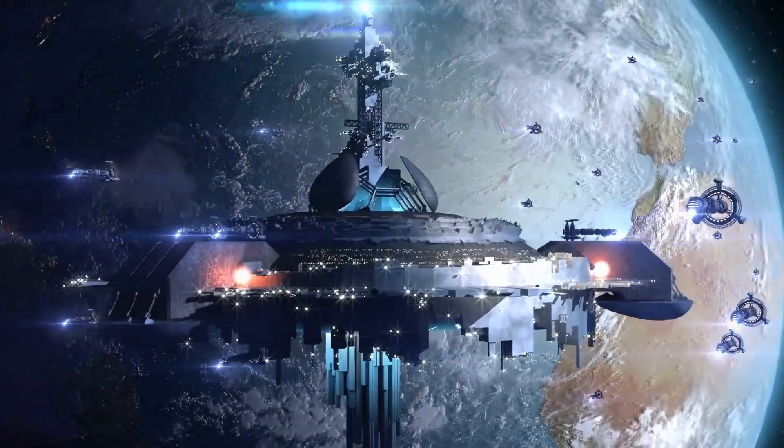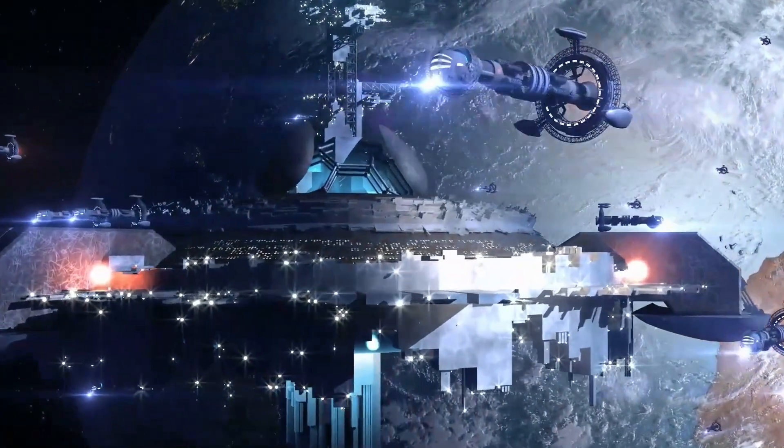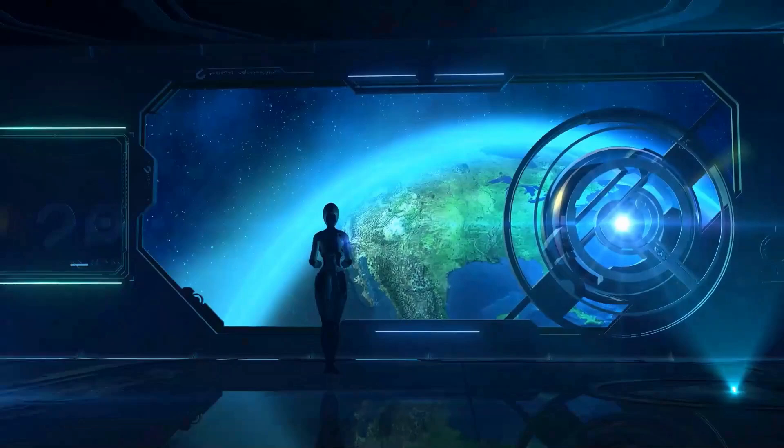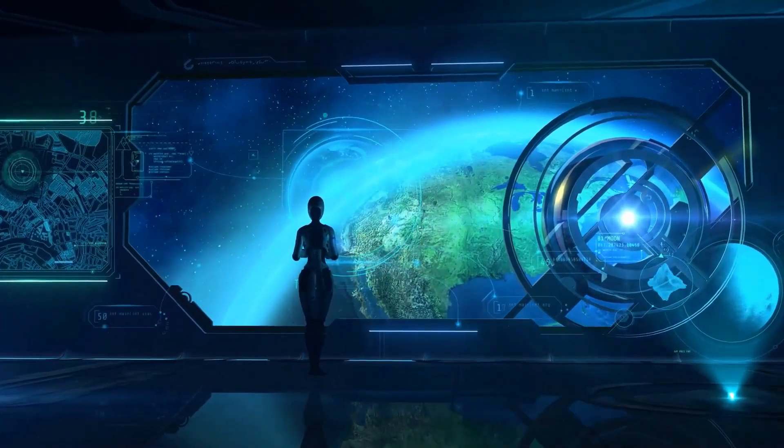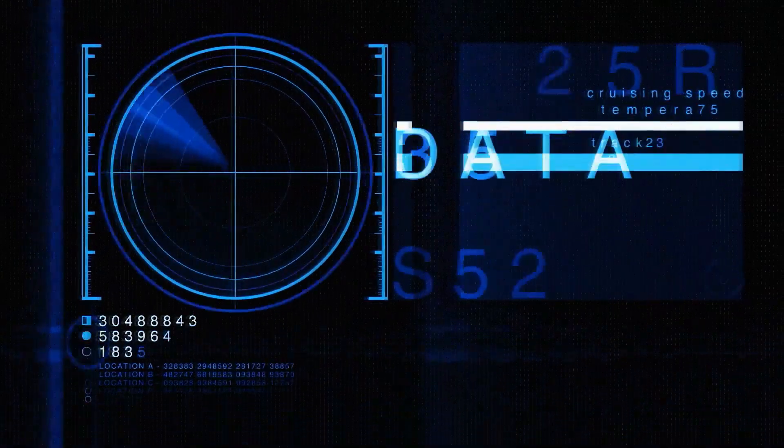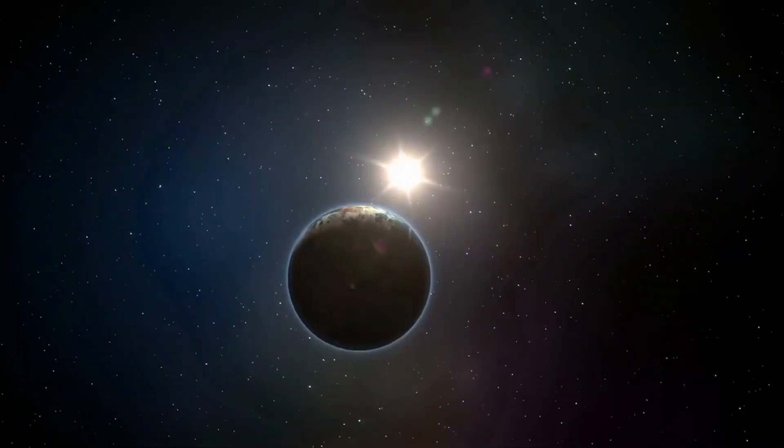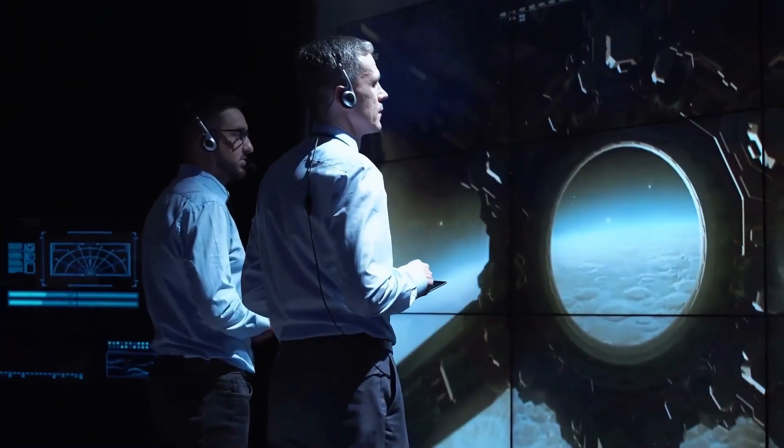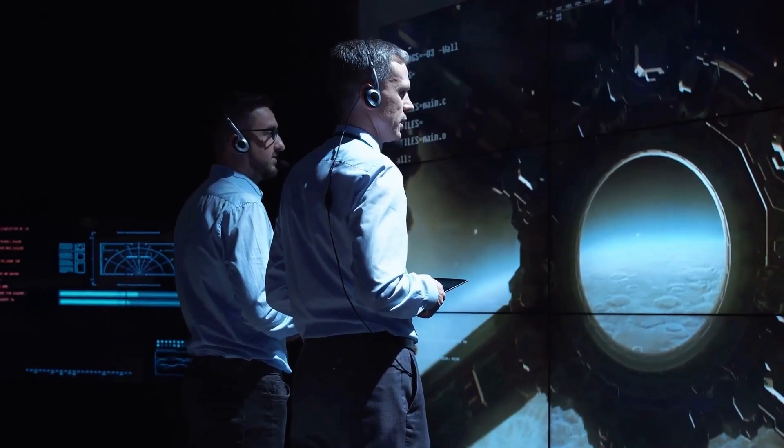The first clue of the possibility of intelligent life on Proxima b was discovered back in 2019 when a strange signal was picked up coming from the direction of the planet by the Parkes radio telescope in Australia. Although the reports are still a bit unclear, the signal reportedly showed up during five different 30-minute periods over several days while the telescope was directly pointed towards the planet.